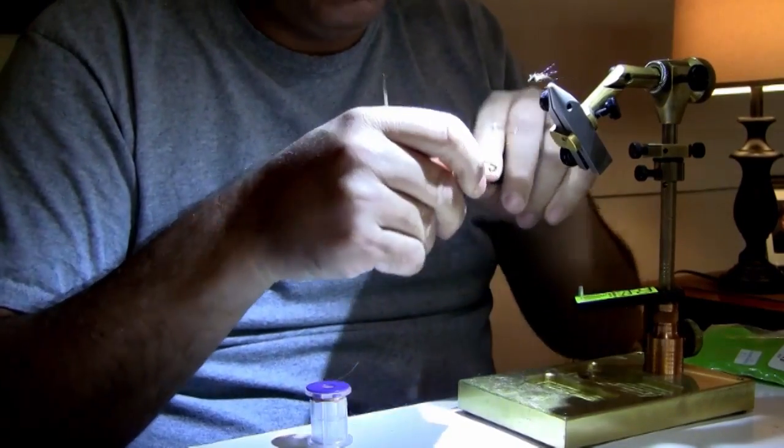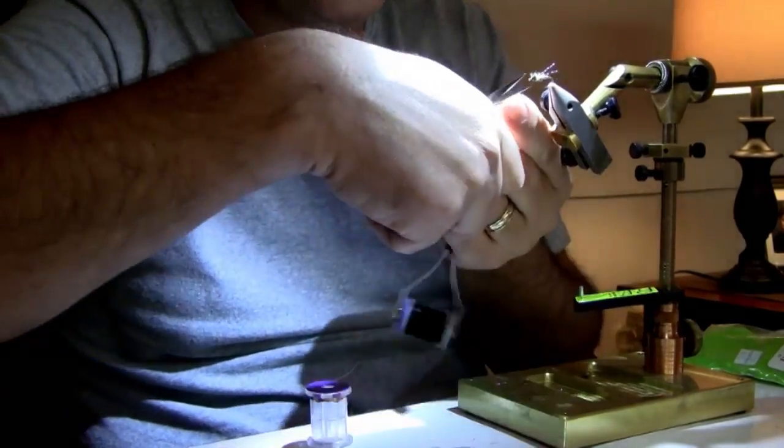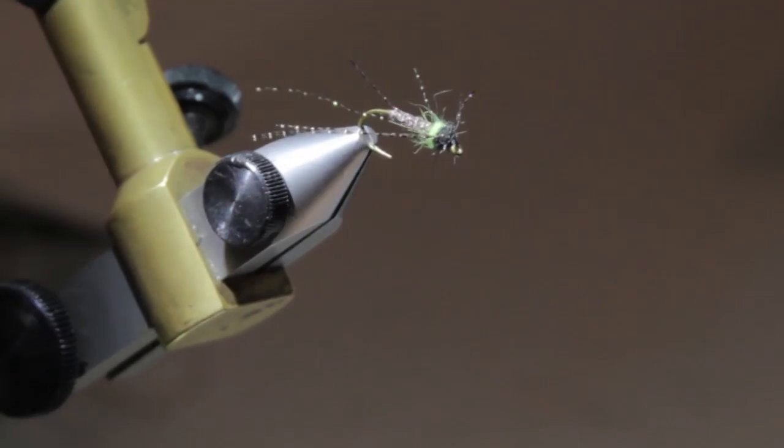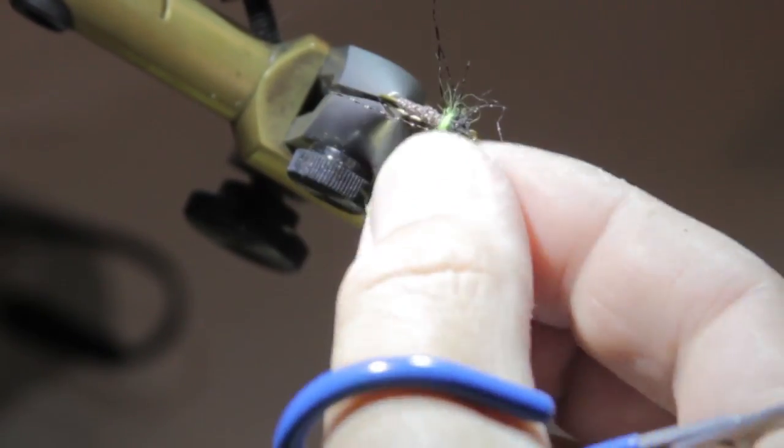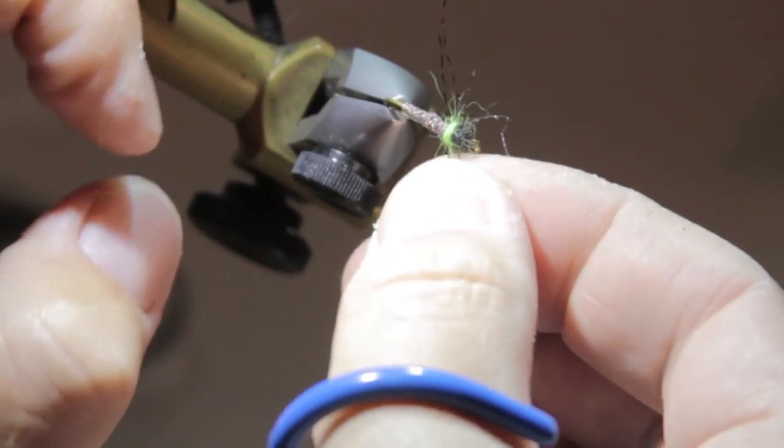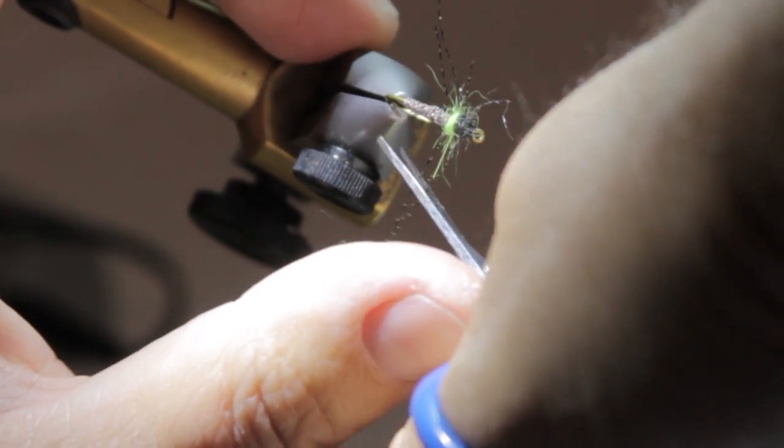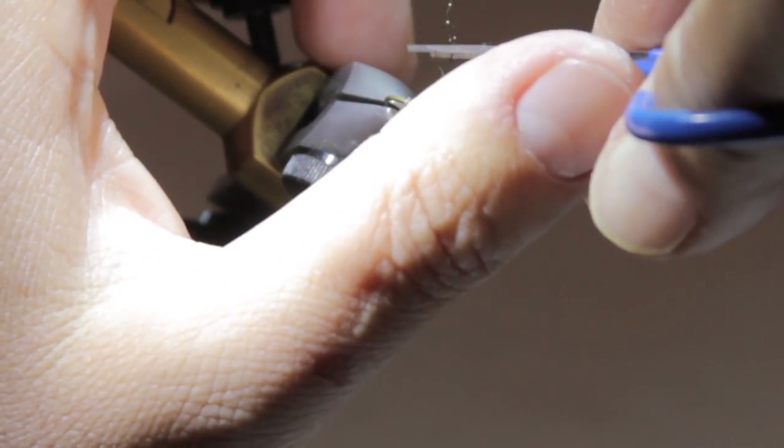We'll put a little whip finish on this fly. And then we're going to turn this fly so I can get these legs all trimmed up to the same length. So I'm just going to pull them out. This last one here. And they should be about a gap width of your hook you're tying on.